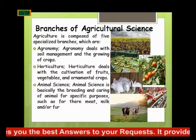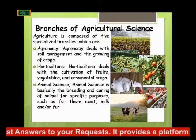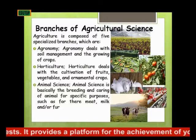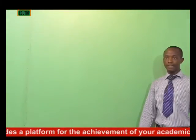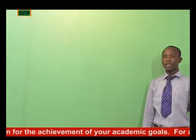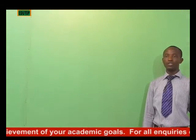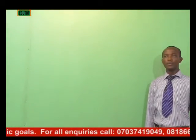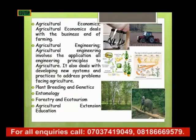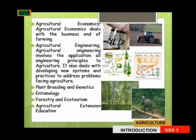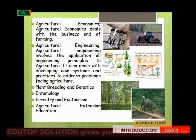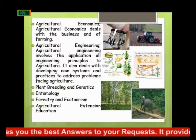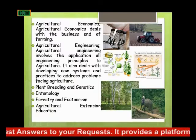Then we have Animal Science, which is basically the breeding and rearing of animals for specific purposes such as meat, milk, and leather — leather being used in the making of our shoes, bags, and clothes. Then we have Agri-economics, which deals with the business and marketing activities and the day-to-day management of agricultural activities.